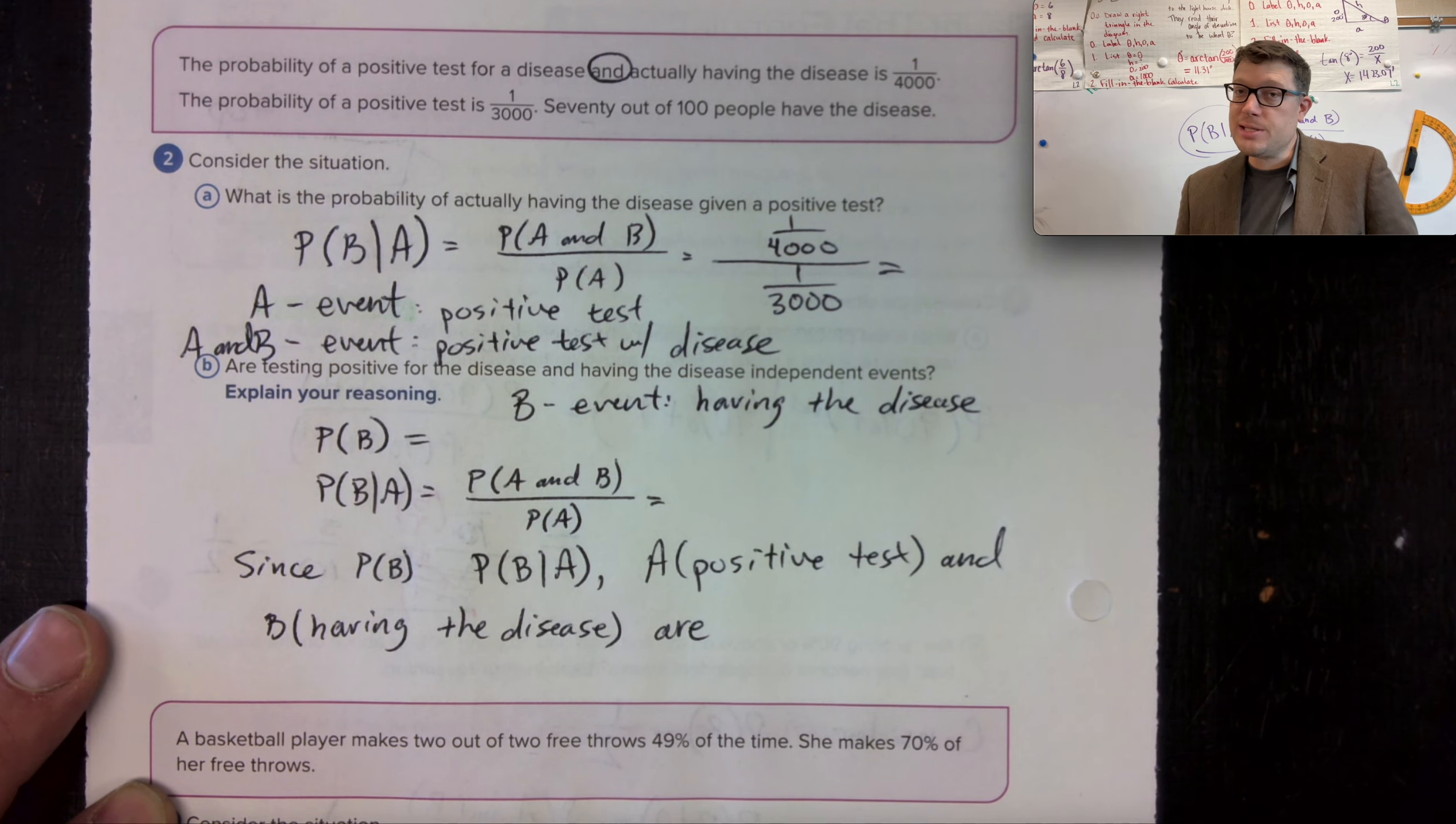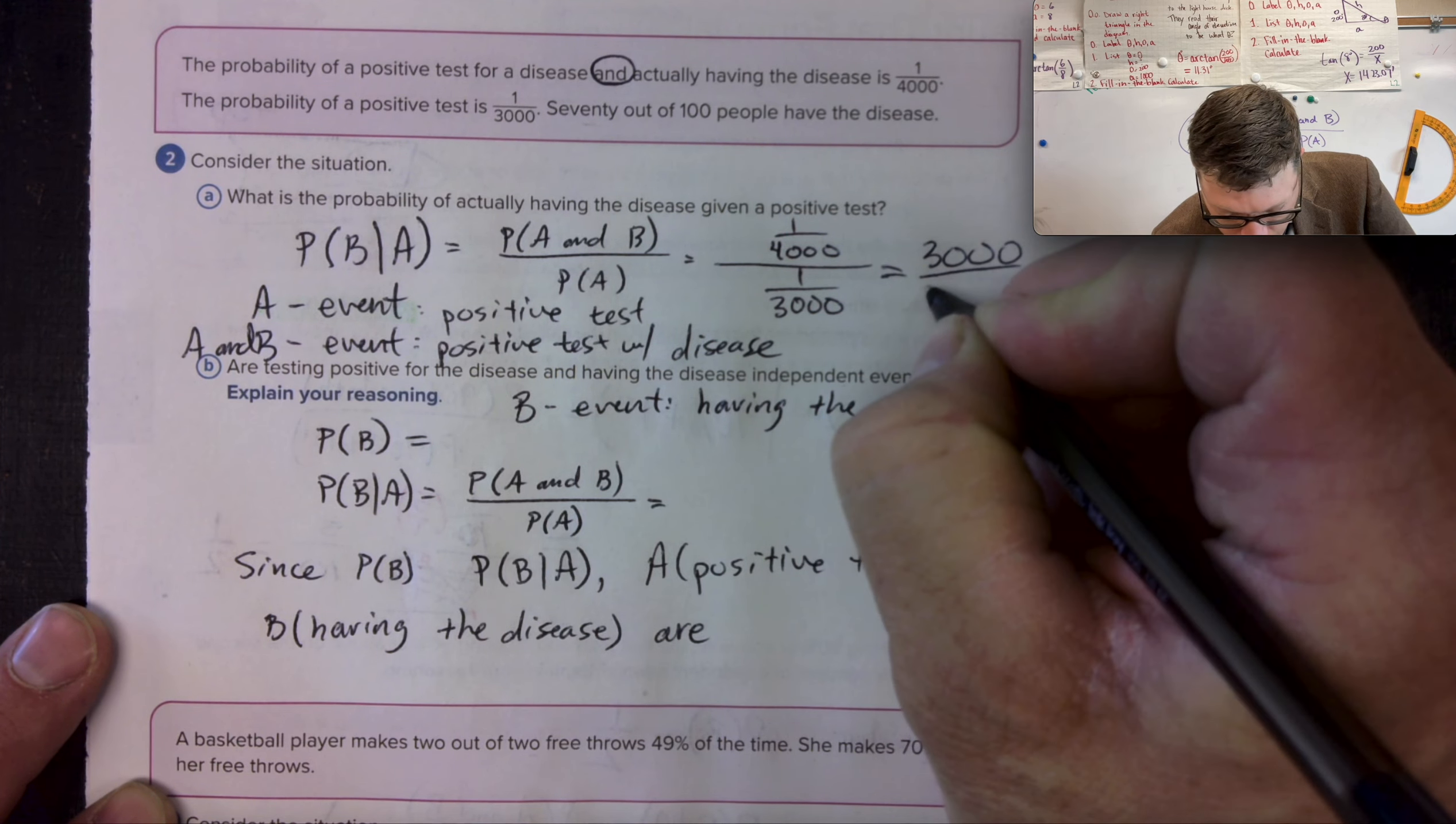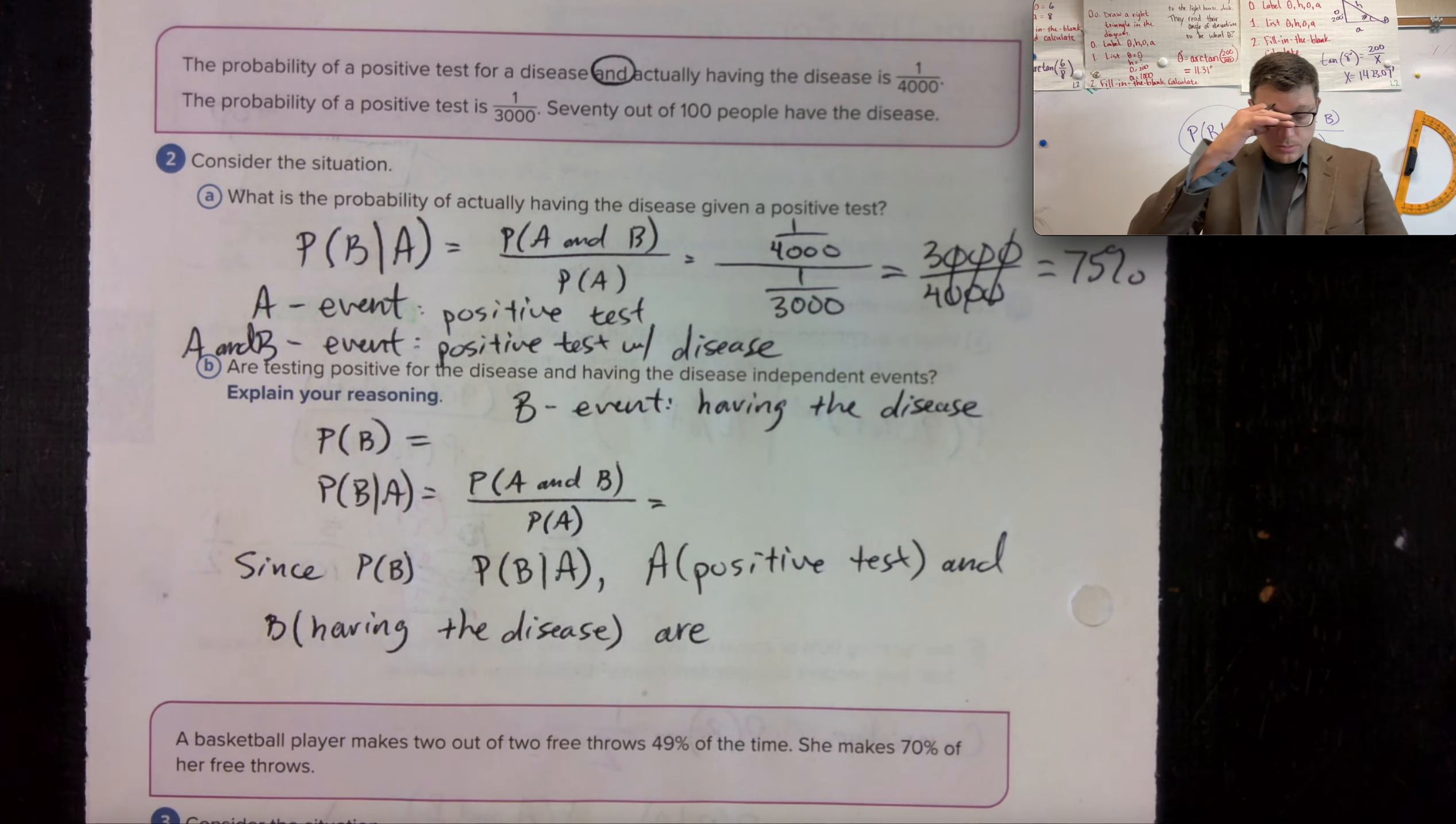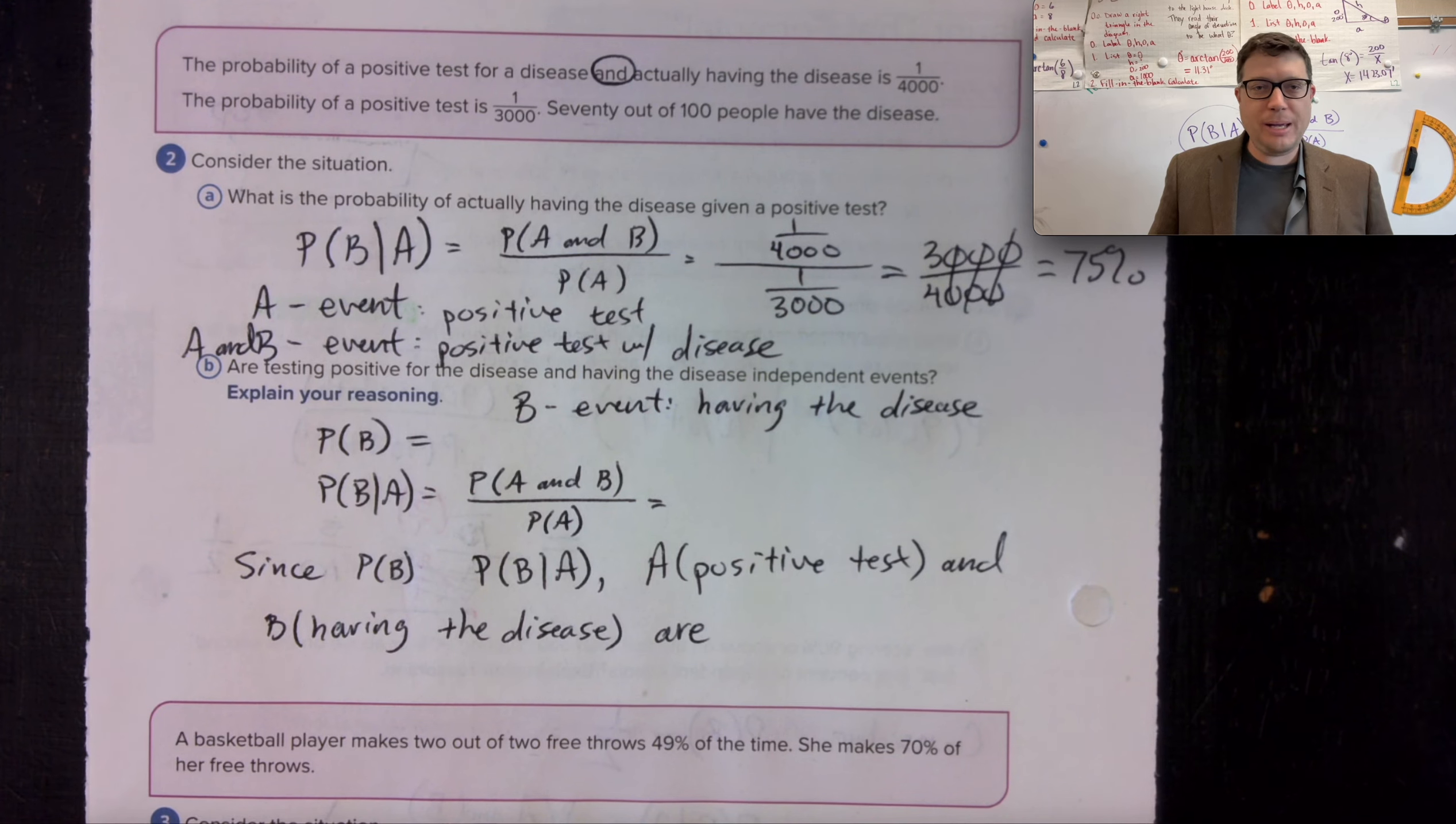Which translates to flipping the fraction. The 3,000 goes to the top of the other one: 3,000 out of 4,000. If you divide, reduce these all by a thousand, you reduce down to three-fourths or 75%. Are testing positive for the disease and having the disease independent events?